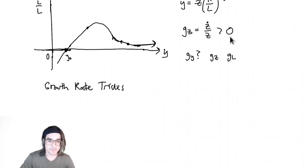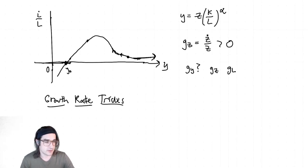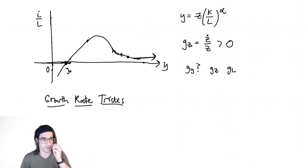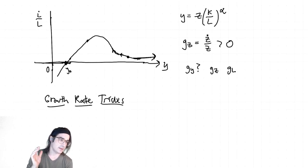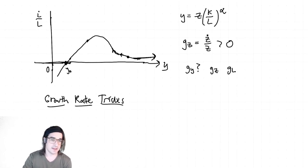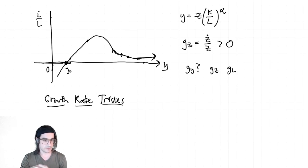So: growth rate rules — whatever you want to call them. The goal: we know G_Z is growing at some rate, we have some idea of G_L, and we want an expression for G_Y. We need to take that equation for y and turn it into a growth rate equation. Just like in calculus there's the product rule, quotient rule, power rule — there are analogous rules for growth rates, because growth rates are just derivatives divided by the variable itself. It makes sense that analogous rules should exist.